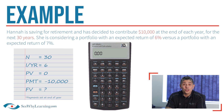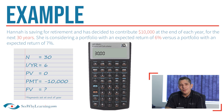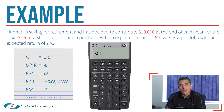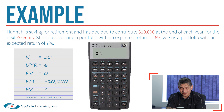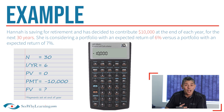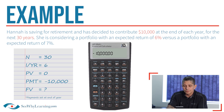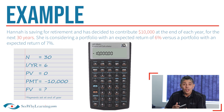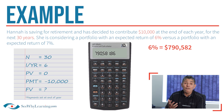Let's start with an expected return of 6%. N is 30, because she'll be saving for 30 years. The I/YR will be 6, which is the expected return on her investment. The present value will be 0, because Hannah hasn't saved anything yet. The payment will be minus $10,000, because that's how much she's going to be taking out of her pocket or bank account each year and putting into her investment portfolio. The future value is unknown — that's what we're trying to determine. So if we press the FV button, we get an answer of approximately $790,582.